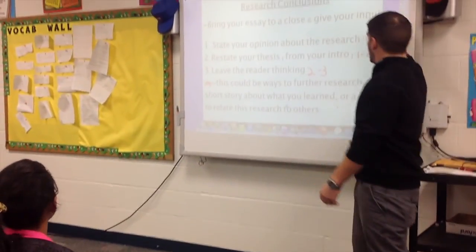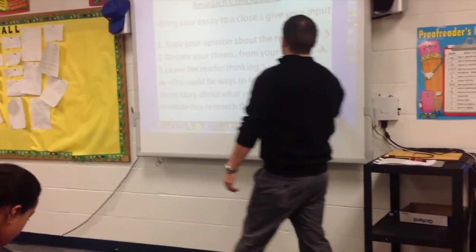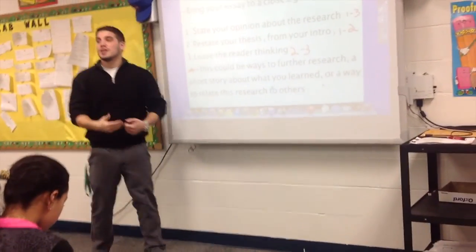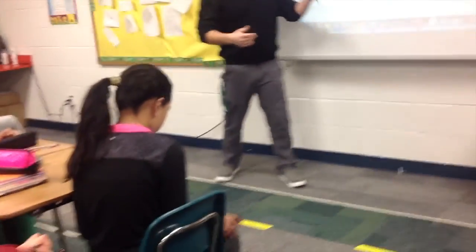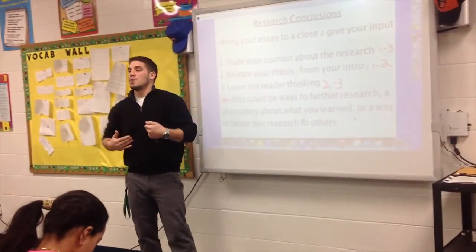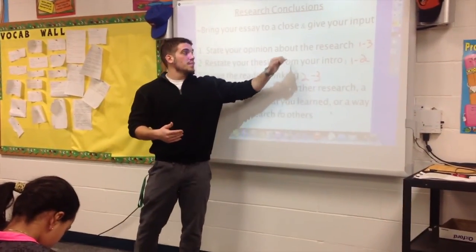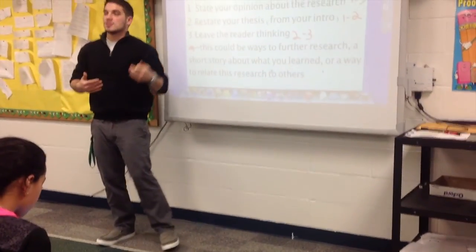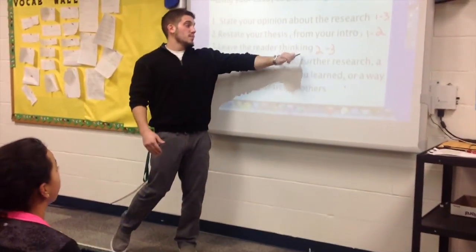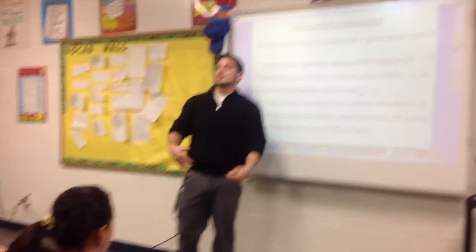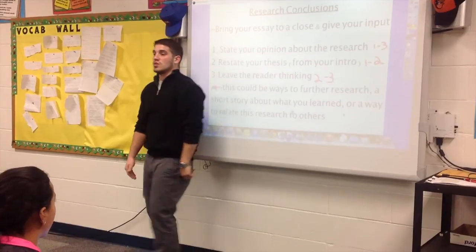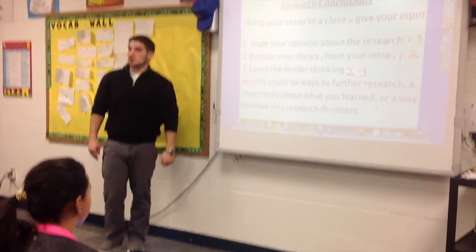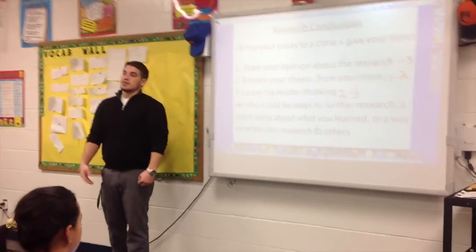The first part, stating your opinion, should be one to three sentences — you don't have to overdo it. Restating your thesis is probably one sentence, but maybe two. Then the third thing, leaving the reader thinking, should be done in two to three sentences. That leaves you with four to eight sentences total for your conclusion. That's it — just a short, simple conclusion to leave the reader thinking.